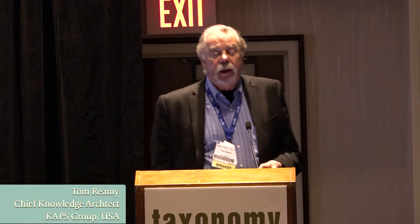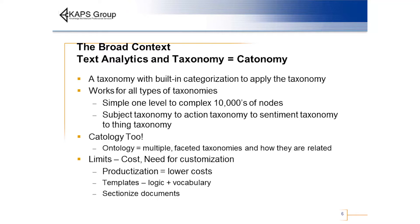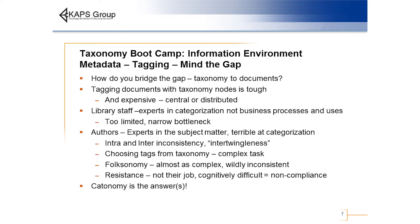What is a catonomy? A catonomy is a taxonomy with built-in categorizations to apply the taxonomy. Why do you need that? Because there is what's called the gap — the gap between the taxonomy and the documents to which it's applied. And that's a gap that has been plaguing taxonomy for as long as taxonomy has existed.